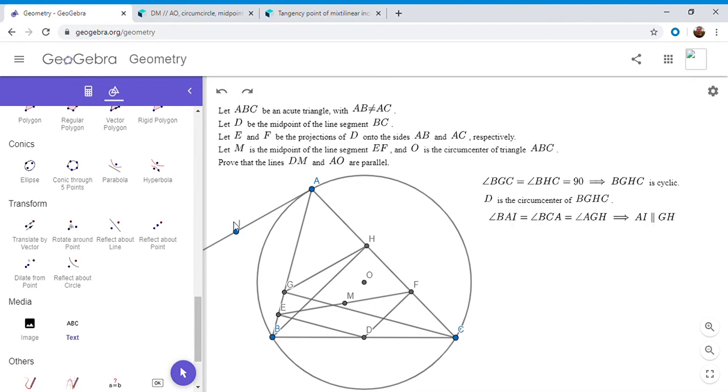So we have angle BAI is equal to angle BCA, and BCA is equal to angle AGH. And that's because since BGHC is cyclic, the angle C has to be the exterior of the opposite angle of BGH. So angle C has to be equal angle AGH. So here we have angle BAI is equal to angle AGH.